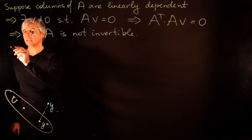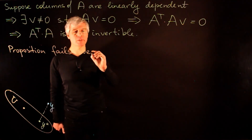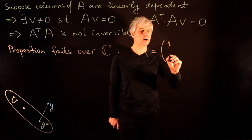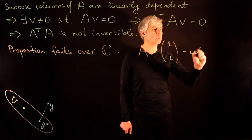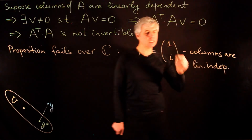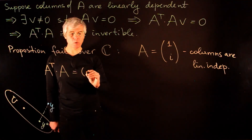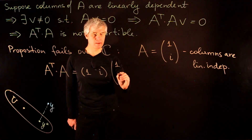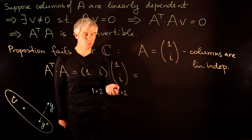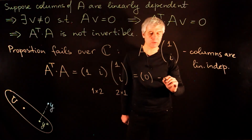This proposition fails over complex numbers. For example, take matrix A as the 2 by 1 column vector (1, i). The single column is non-zero, hence linearly independent. But A-transpose A is the product of the row (1, i) with the column (1, i), which equals 1 squared plus i squared equals 1 minus 1 equals zero. So A-transpose A is the zero matrix and is not invertible.